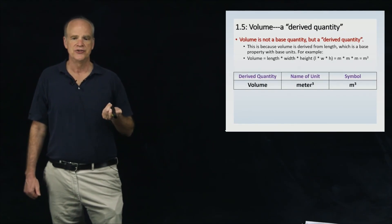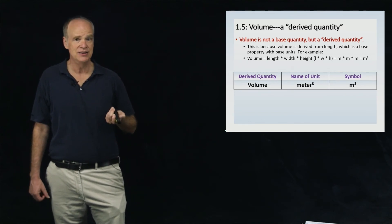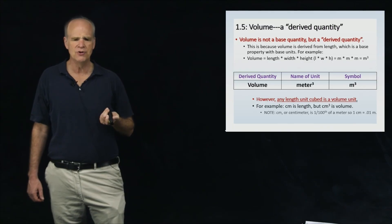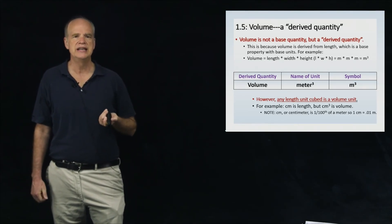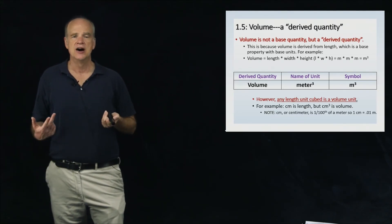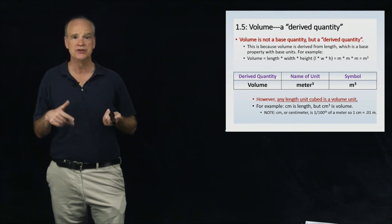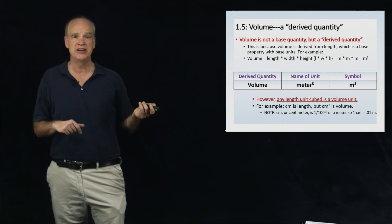Since meters cubed was derived from multiplying the base unit, it is a derived unit, not a base unit. Volume is a derived unit; its SI units are meters cubed, symbolized m³. Importantly, you can take any length unit and cube it to get a volume unit. For example, if a box has dimensions of one centimeter on each side, then its volume is centimeter × centimeter × centimeter — or centimeters cubed.